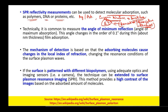This angle changes on the order of 0.1 degree during thin film adsorption of about nanometer thickness. The mechanism of detection is based on adsorbing molecules causing changes in the local index of refraction, thereby changing the resonance conditions of the surface plasmon waves.